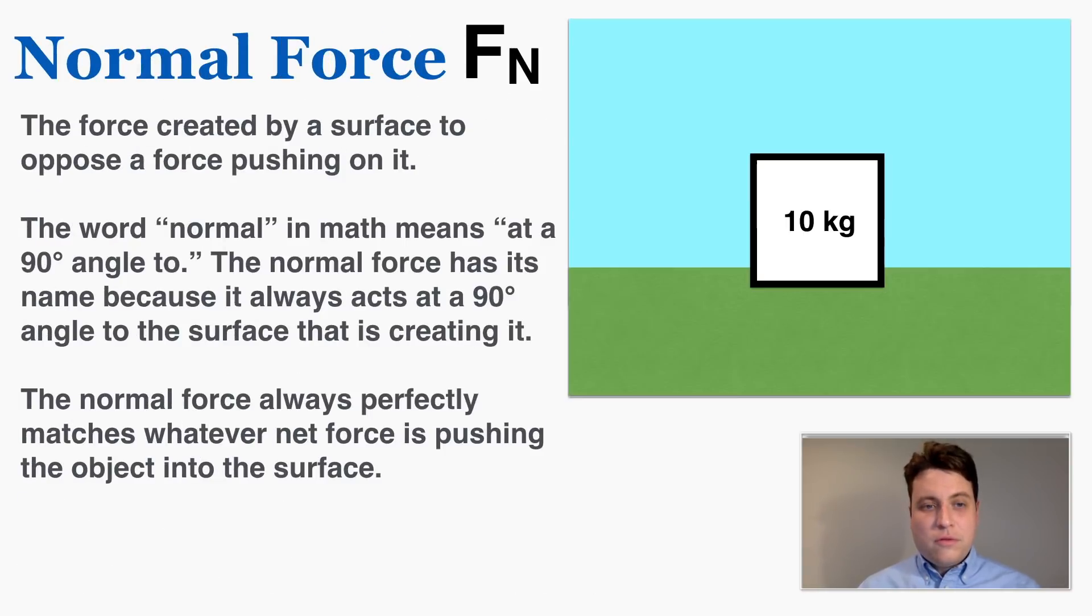Next up we have the normal force. This is the force created by a surface to oppose a force pushing on it. The word normal in math means at a 90 degree angle to, and the normal force has its name because it always acts at a 90 degree angle to the surface that is creating it. The normal force always perfectly matches whatever net force is pushing the object into the surface. So basically when you hear the word normal force I want you to think the force created by a surface to stop the object from falling through the surface.